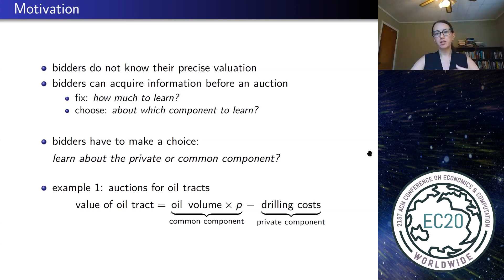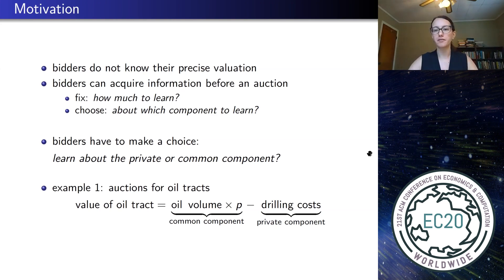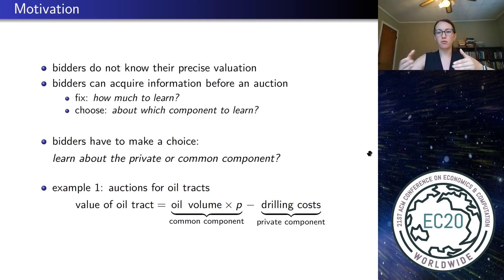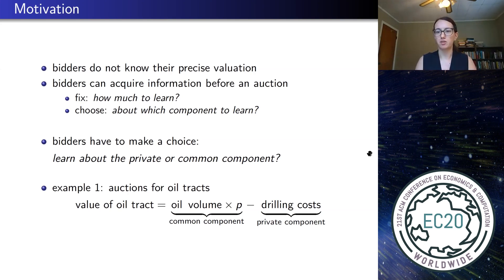Think about an oil field for sale. There's a certain amount of oil on site irrespective of who gets the property rights — they will have the same amount of oil on site. This is a common component. On the other hand, bidders might differ in their drilling costs or ability to extract the resource. So if there's too much information to process, would they perform exploratory drilling to figure out how much oil there is — the common component — or focus on their individual drilling costs, something private to them?